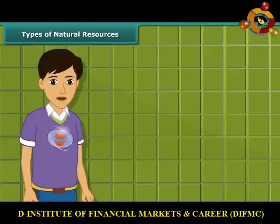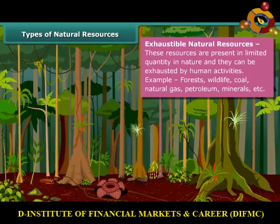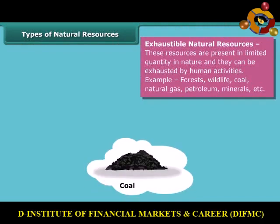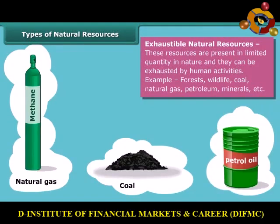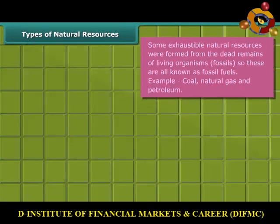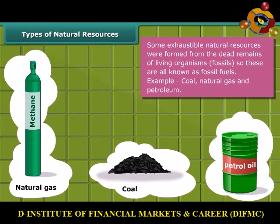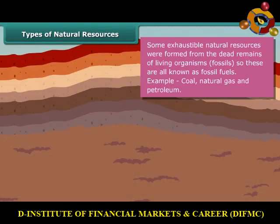Sunlight and air are examples of inexhaustible resources. On the other side, the amount of exhaustible resources is limited, and they can be exhausted by human activities and consumption. Forests, wildlife, coal, natural gas, petroleum, and minerals are examples of these resources. Some exhaustible resources like coal, natural gas and petroleum were formed from the dead remains of living organisms, called fossils, and hence these are also known as fossil fuels.